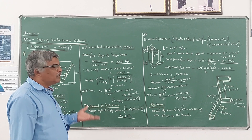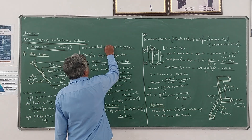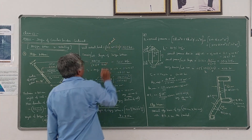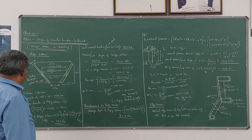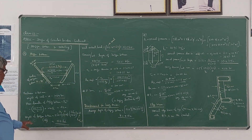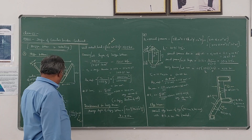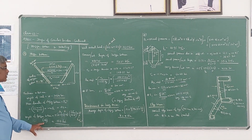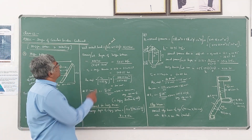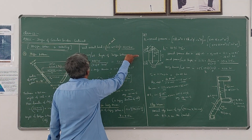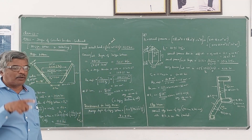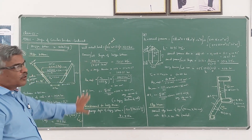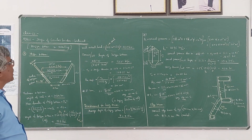Therefore the total vertical load now becomes: weight of the core is 302.4 kN and weight of the hopper bottom is 51.3 kN, so the total vertical load acting on the hopper bottom, which we call WS, is the sum of those two, which comes out to be 353.7 kN.